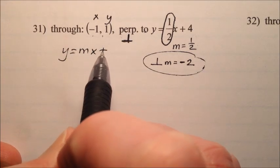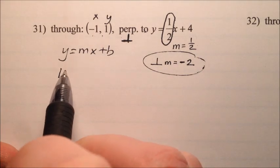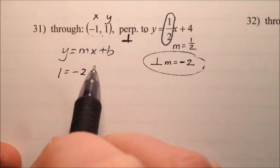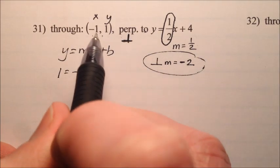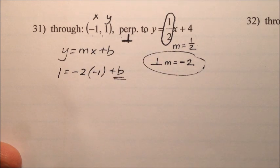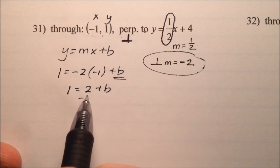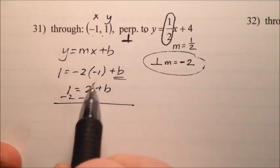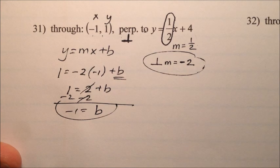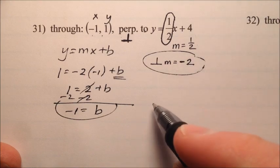So if I have my mx plus b again right here, I can plug 1 in for y, negative 2 for m because that's my perpendicular slope, negative 1 for x, and I'm solving for that new b. So 1 equals 2 plus b, means I can subtract 2 from both sides, and b ends up being negative 1 right there.